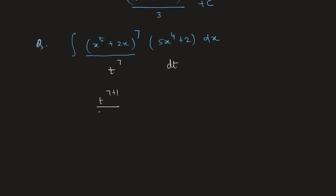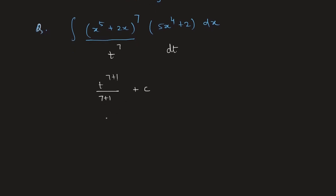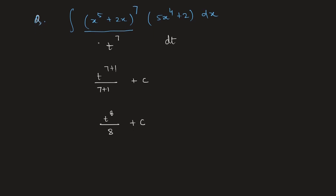Simply consider t = x⁵ + 2x and integrate t⁷: this gives t⁸/8 + c. Substituting back, the answer is (x⁵ + 2x)⁸/8 + c.